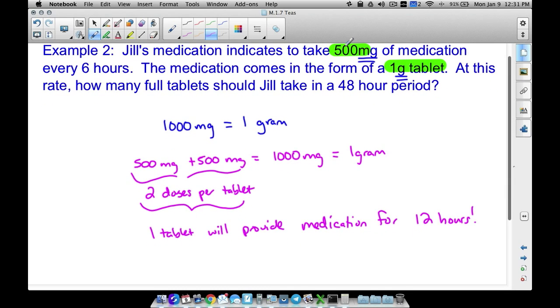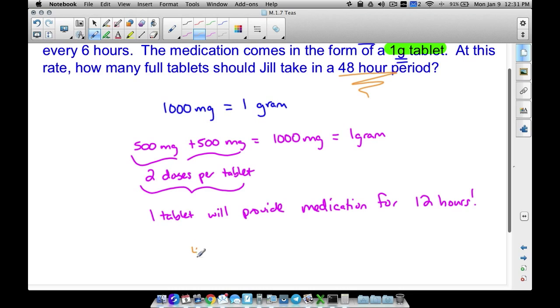Because remember, she takes 500 milligrams every six hours. So she's going to take one here and one here. That's six hours and six hours. That's one tablet. So one tablet's going to last her 12 hours. Well, the question says, how many full tablets should Jill take in a 48 hour period? Well, we know that one pill is going to last 12 hours. Let's take the 48 hours and divide by 12. That's going to give us four. Because one tablet is going to provide 12 hours of medication. So 48 hours divided by 12, she will need four tablets.